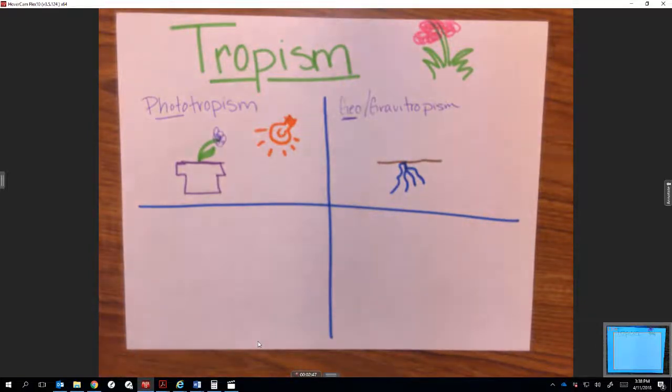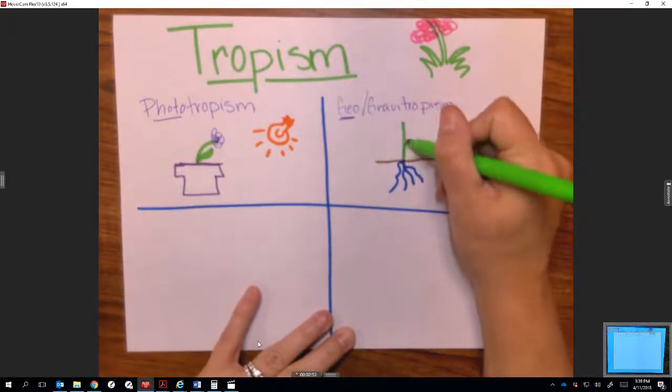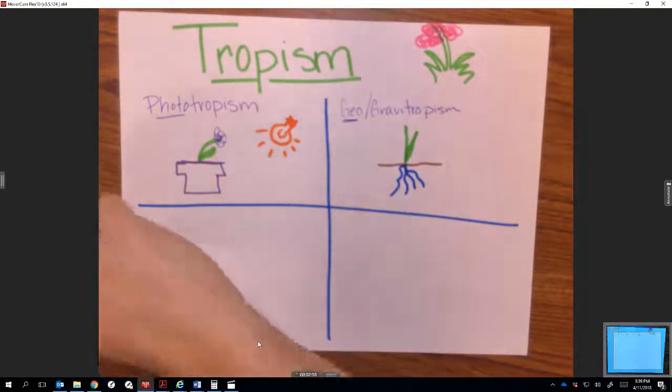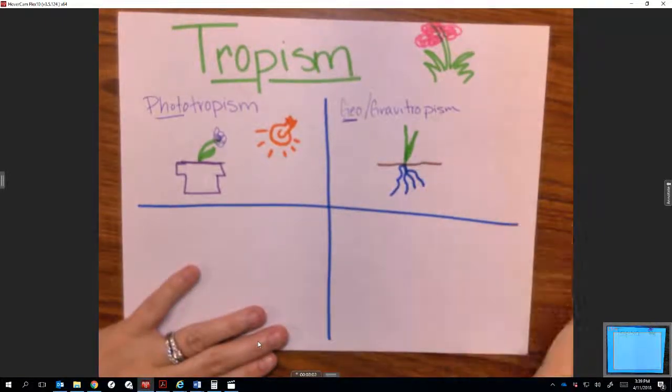When the stem grows, it grows away from gravity. Because it's growing away in the opposite direction of gravity, it's said to have negative geotropism. That's the biggest struggle I've seen for students is distinguishing between negative and positive.